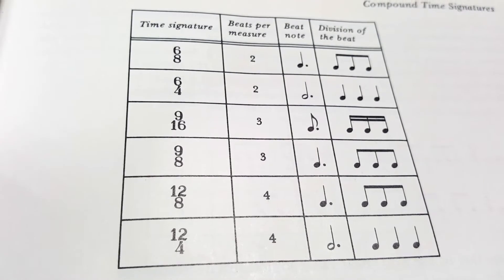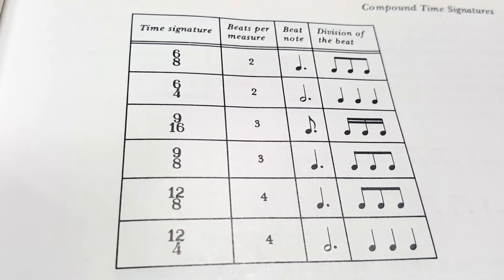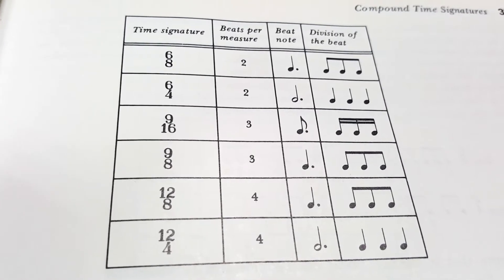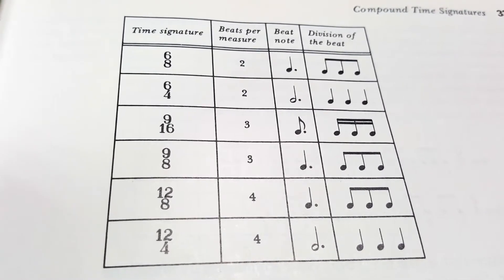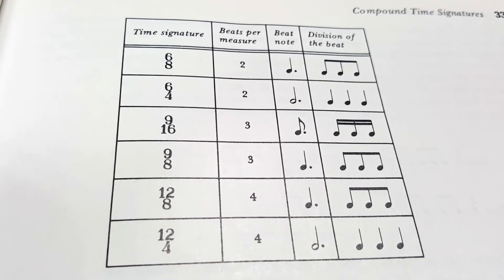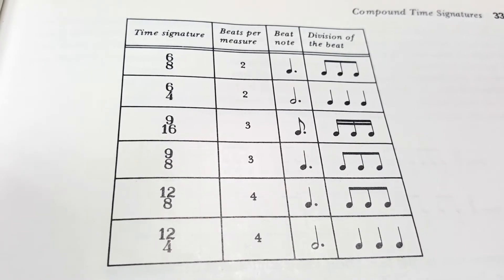So here are some examples from Kostka and Payne, again, of compound time signatures. And the simple definition of a compound time signature is a time signature that can be divided into other forms, or other numbers, or values.